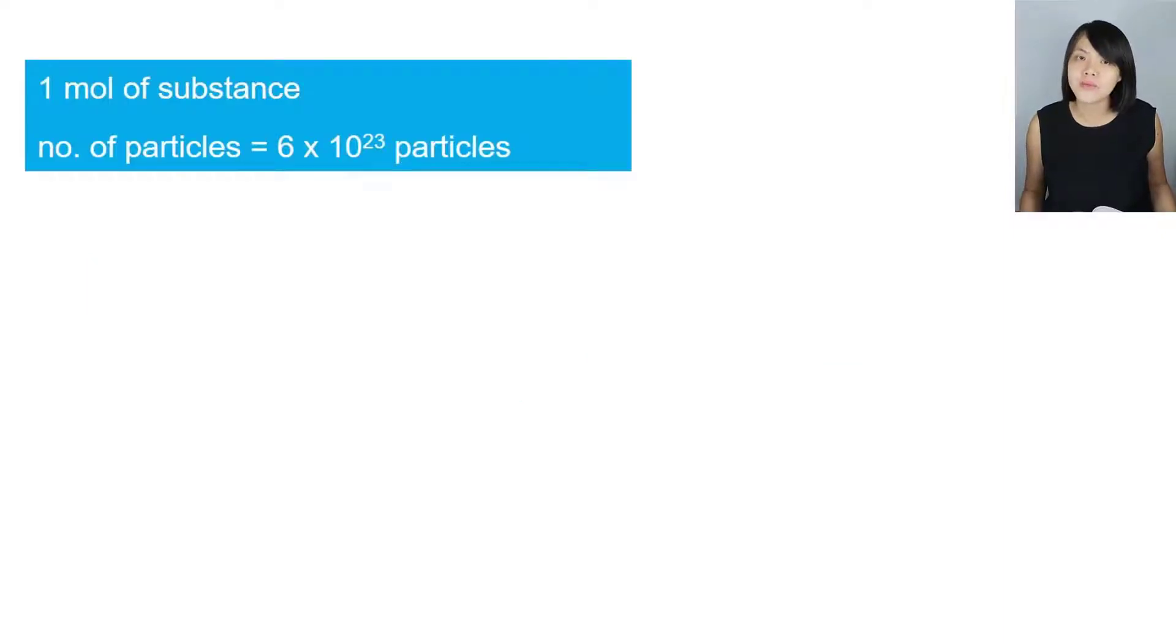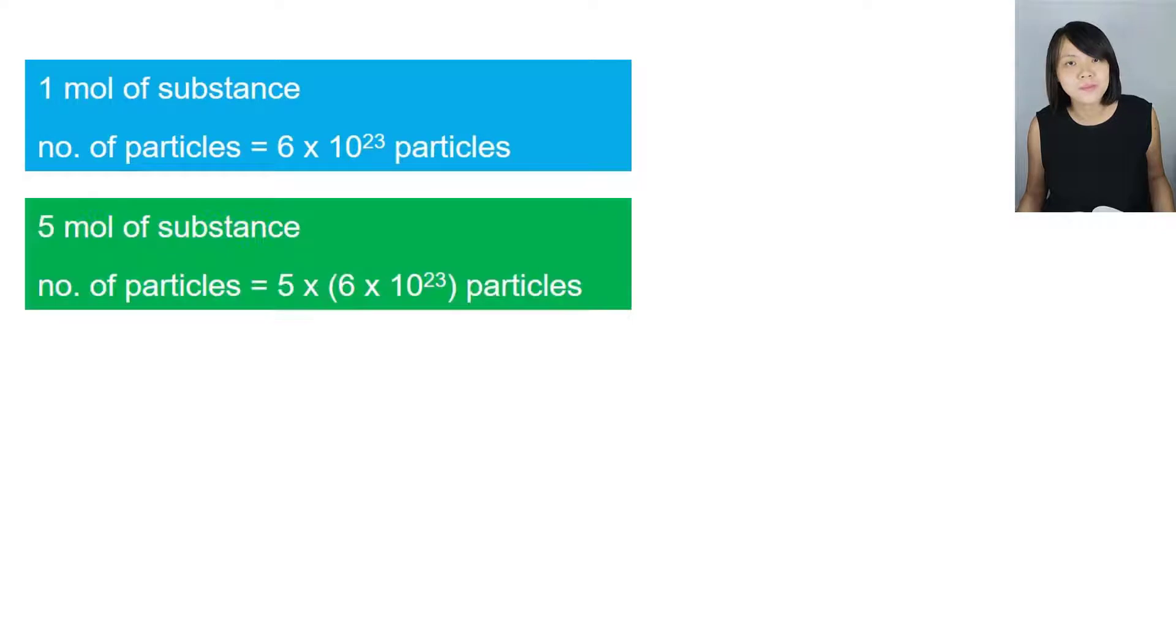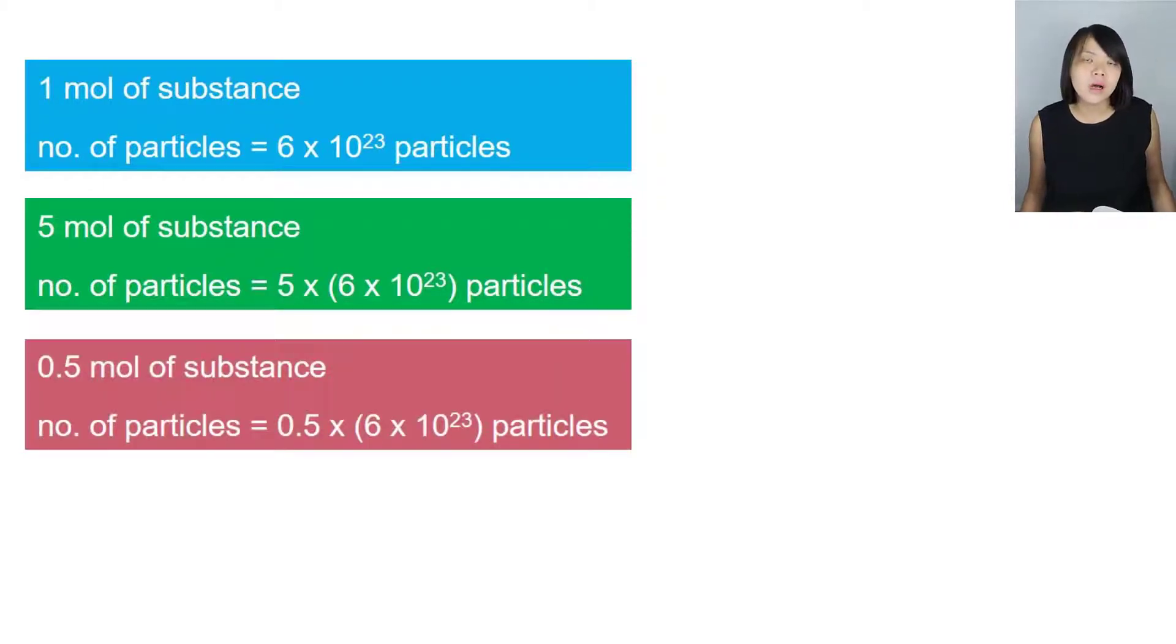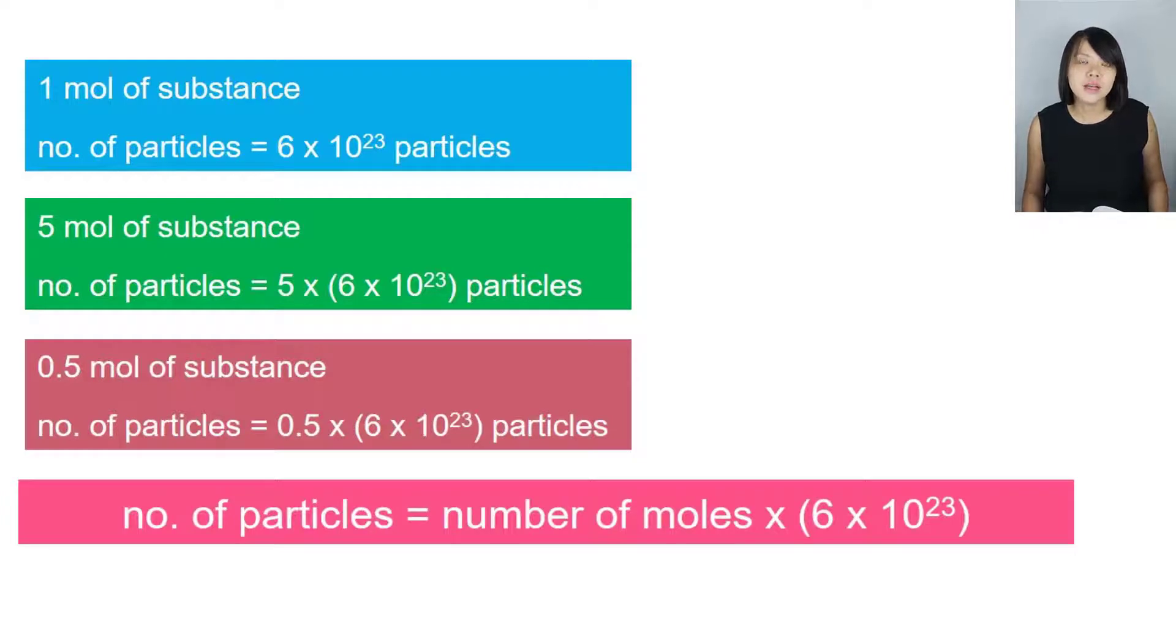So since one mole of substance contains 6 times 10 power 23 of these particles, it means that 5 moles of this substance will contain 5 times 6 times 10 power 23 of particles. What about half a mole? Half a mole simply means that it will be 0.5 multiplied by 6 times 10 power 23. Hence, we can simply say that the number of particles is actually number of moles multiplied by 6 times 10 power 23.